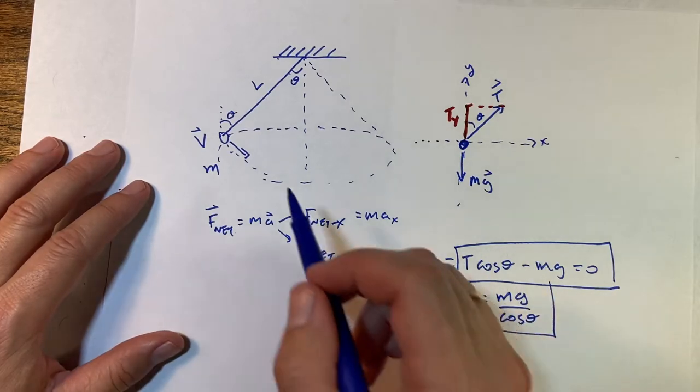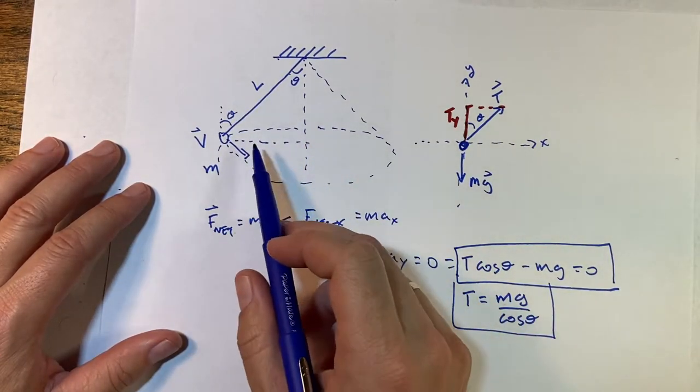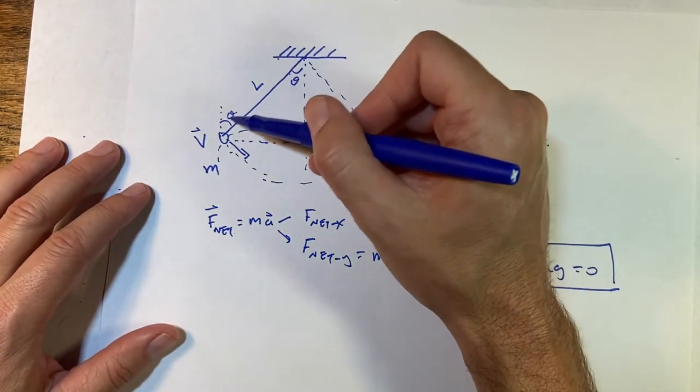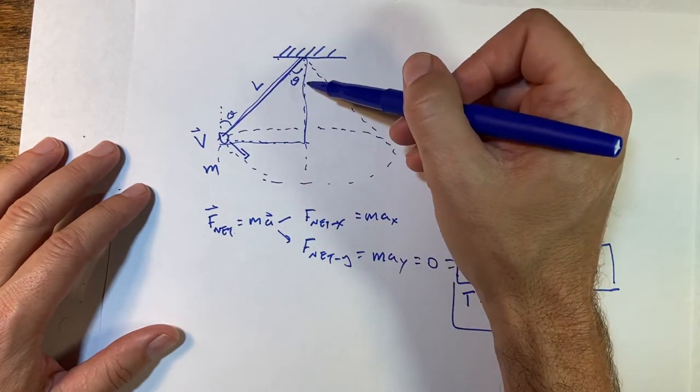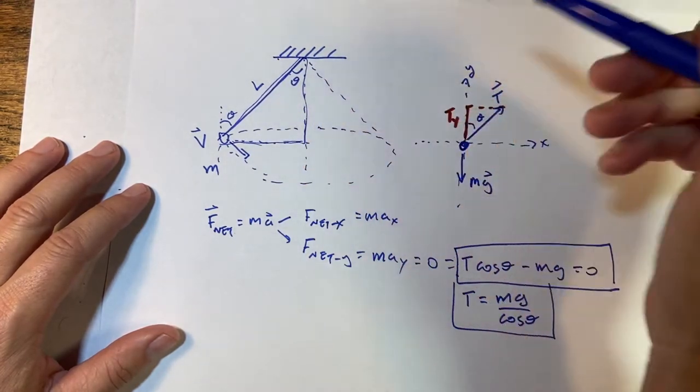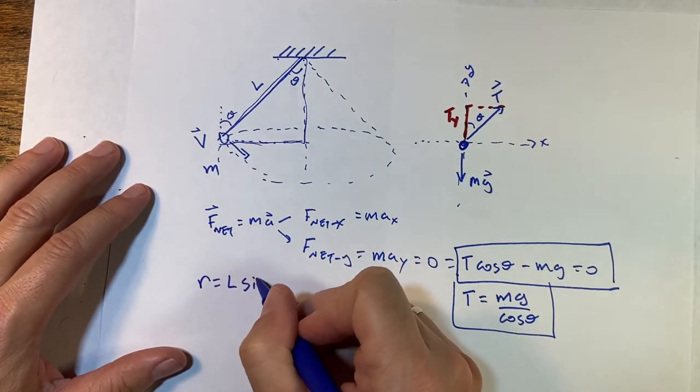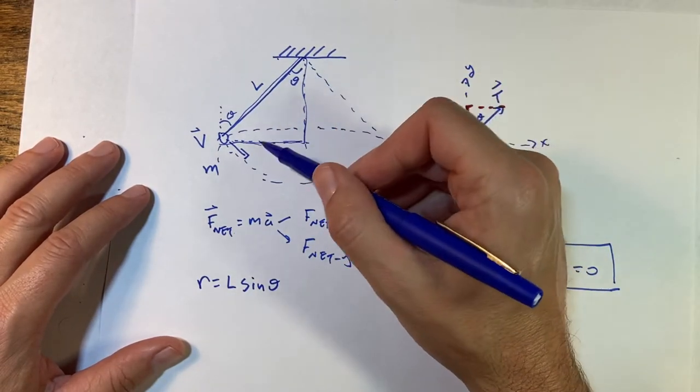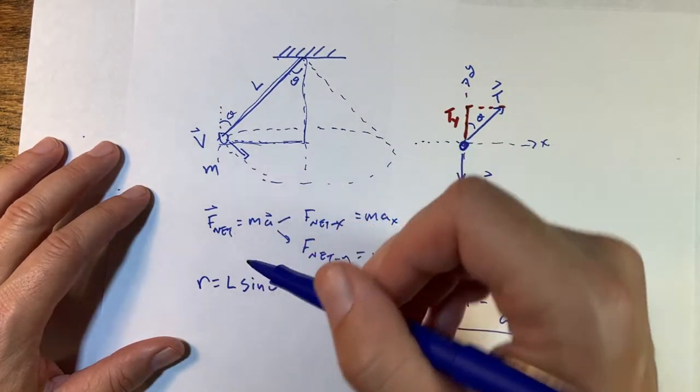Now let's look at the x-direction. One of the things here that I'm going to need is the radius, the radius of the circle. So if I look at this big triangle right here, this is some length L. This is the opposite side of that. So I know r is going to be equal to L sine theta. Sine is the opposite side. Sine of theta is opposite over hypotenuse. And that's the radius. So I can solve for that and I get L sine theta.